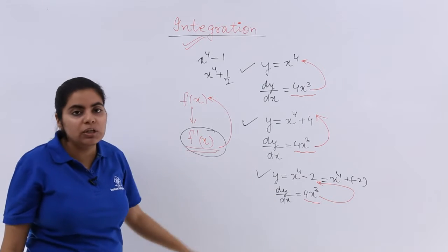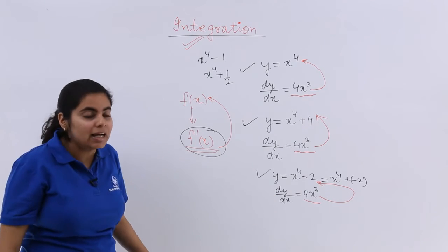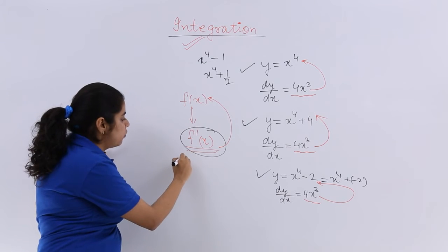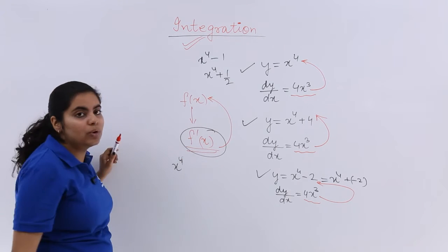Whatever the function was, all would give me 4x cube. That means x raised to the power 4 is fixed. x raised to the power 4 does not change. It will be there only.